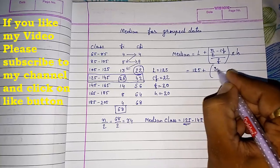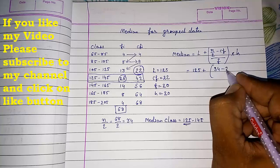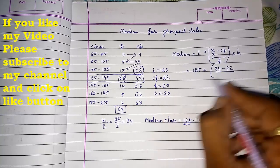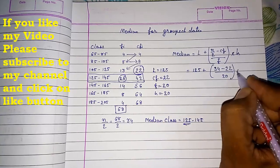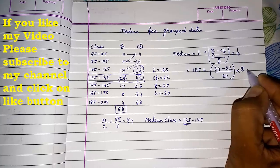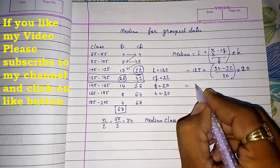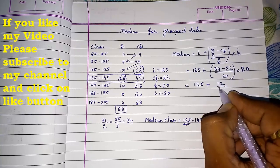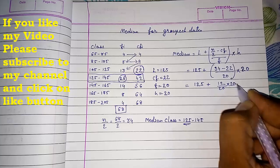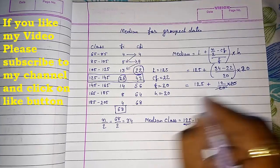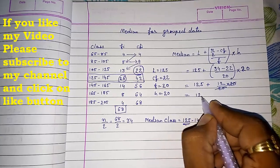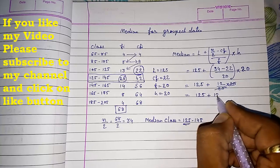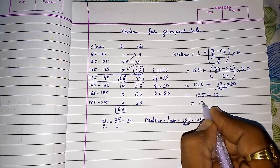n by 2 is 34 minus CF is 22. F is 20 into H is 20. So 125 plus 12 by 20 into 20. We can cancel this, so 125 plus 12 gives you 137.